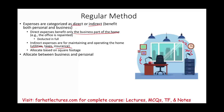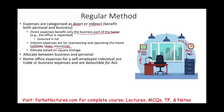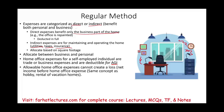If you are self-employed with a trade, home office expenses are deductible for AGI as part of Schedule C. However, allowable home office expenses cannot create a loss. The home office expense can bring you to break-even but not to a net loss — similar to hobby or vacation rental rules. Excess expenses like depreciation can be carried forward. Amounts for interest and taxes that aren't fully used can still go on Schedule A if you itemize.